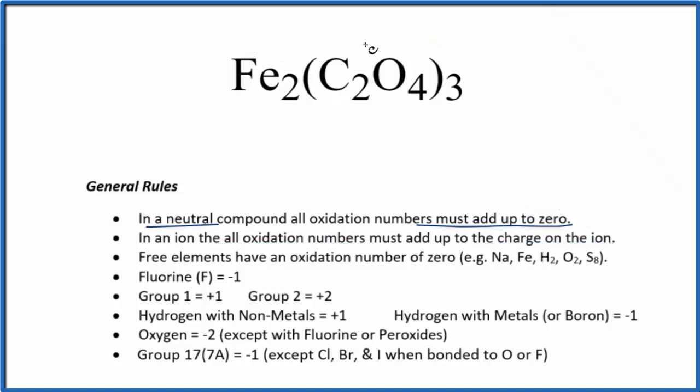So for this compound here, this iron three oxalate, you do need to know the charge that the oxalate has - the whole thing has an ionic charge of two minus, so we can use this rule to find the oxidation number on the iron. This is Dr. B. The oxidation number for iron three oxalate. Thanks for watching.